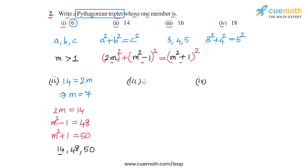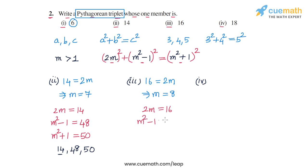For part 3, setting 16 = 2M gives M = 8. The Pythagorean triplet is: 2M = 16, M² − 1 = 64 − 1 = 63, and M² + 1 = 64 + 1 = 65. So the answer for part 3 is 16, 63, and 65.